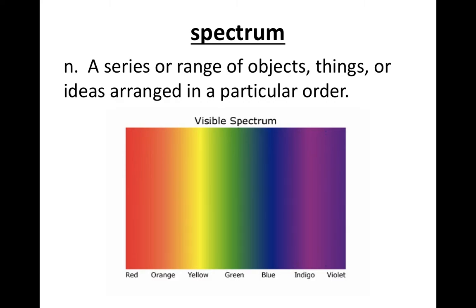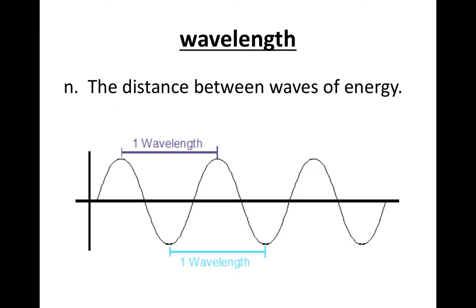Spectrum – a series or range of objects, things, or ideas arranged in a particular order. Wavelength – the distance between waves of energy.